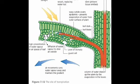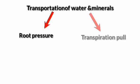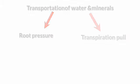Thus, transportation takes place in the upward direction only. Transpiration also cools the surface of the leaves when the temperature outside is very high. Water and minerals are transported by root pressure and transpiration pull. Root pressure is more effective at night while transpiration pull is the major force for water absorption during the day.